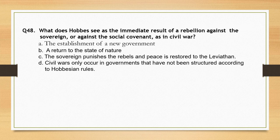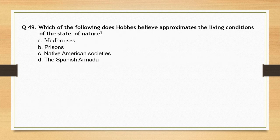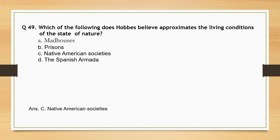What does Hobbes see as the immediate result of a rebellion against the sovereign or against the social covenant — as in civil war? The correct option is option B: a return to the state of nature. Which of the following does Hobbes believe approximates the living conditions of the state of nature? The correct option is option C: Native American societies.